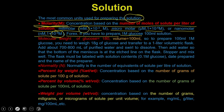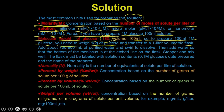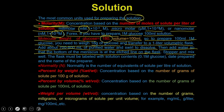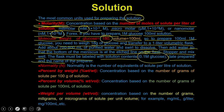The molecular weight of glucose is 180, and the volume required is 100 ml. To prepare 100 ml of 1 molar glucose, you need to weigh 18 grams of glucose, transfer it to a volumetric flask, add 700–800 ml of purified water, allow it to dissolve, then add water until the bottom of the meniscus is at the flask line, stopper, and mix well. The flask must be labeled with the solution concentration — 0.1 molar (100 millimolar) glucose — and the name of the preparator.